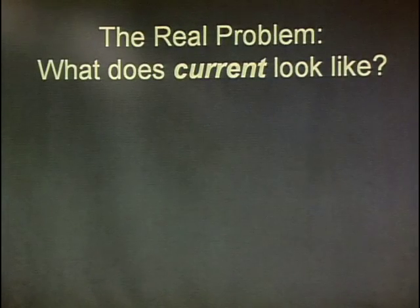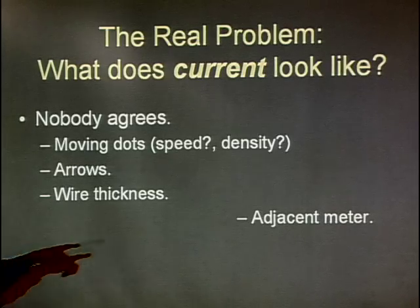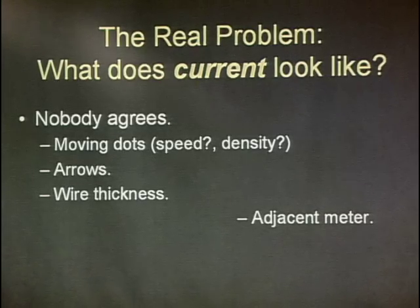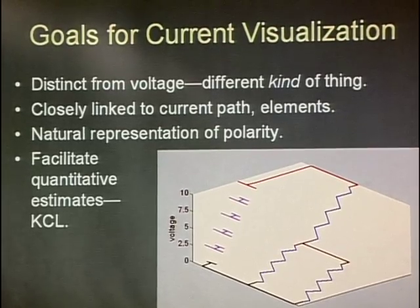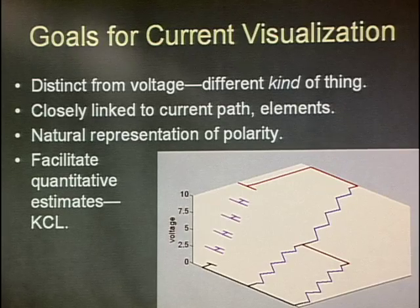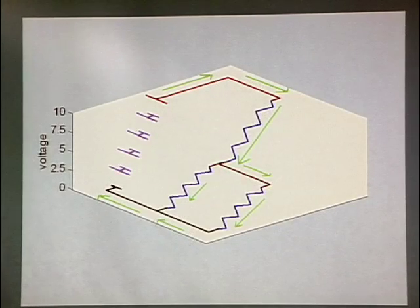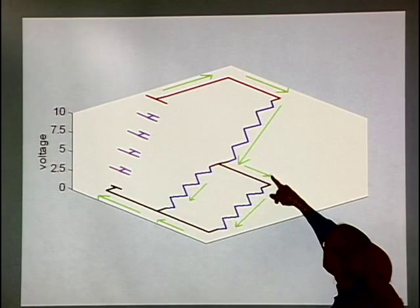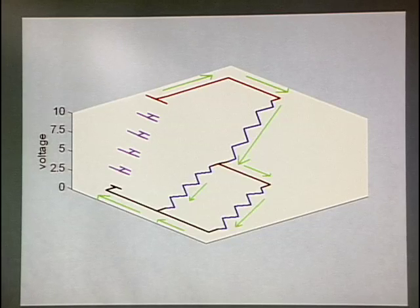Then we get to a more challenging problem of how to draw current. Nobody agrees — there are lots of different things people have done: moving dots, the thickness of an arrow, wire thickness, a little meter sitting on the side. But that doesn't show you what's happening in the circuit; it shows you what you would do in the lab. What we did was use arrows and make the length of that arrow, as well as the thickness of the line, correspond to the current. Now you can see that this arrow length plus that arrow length approximately add up to that arrow length — so you can see Kirchhoff's current law in operation, giving you semi-quantitative information.